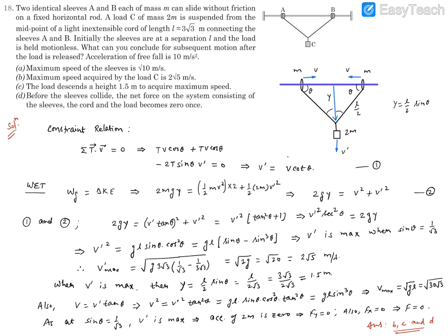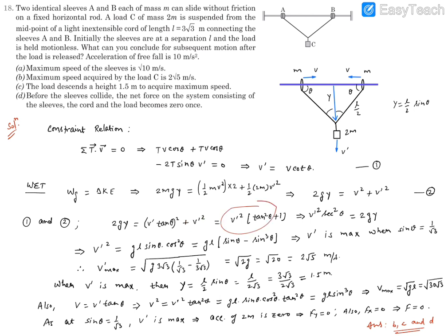We now have two key equations. To find how the load's velocity v' varies, substitute v = v'·tan θ into the energy equation: 2gy = v'²·tan²θ + v'² = v'²(1 + tan²θ) = v'²·sec²θ. So v'²·sec²θ = 2gy. From the right-angle triangle at this instant, y = (L/2)·sin θ. Substituting: v'²·sec²θ = 2g·(L/2)·sin θ, and simplifying gives v'² = gL·sin θ·cos²θ.